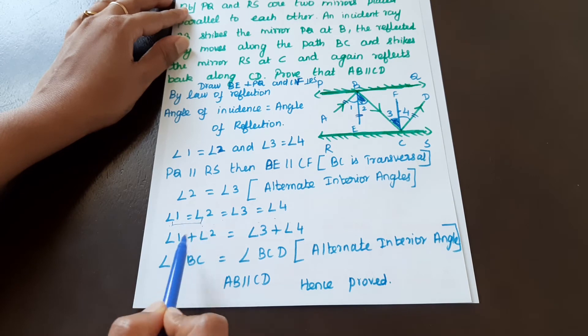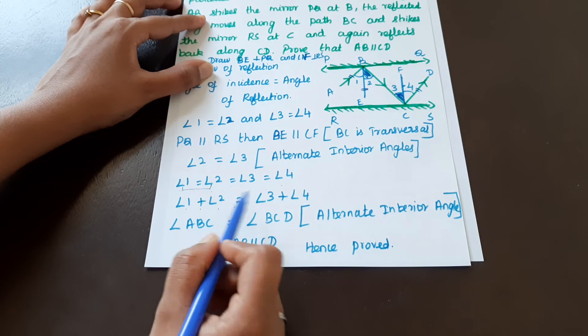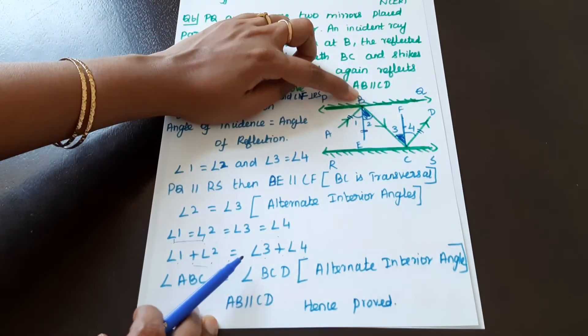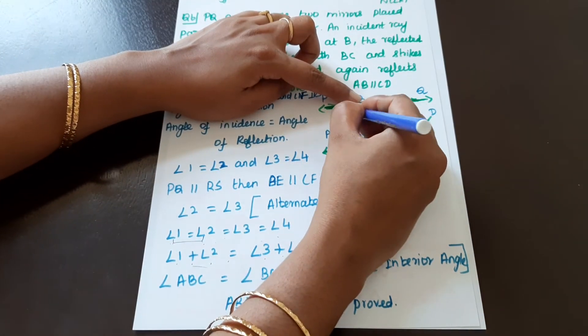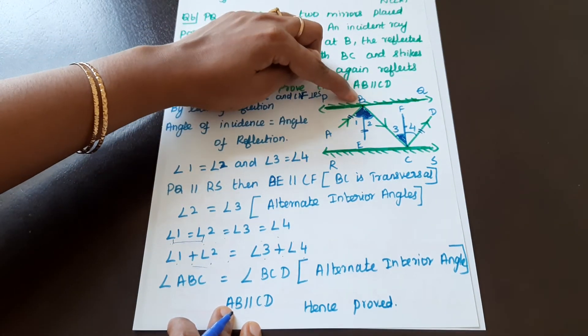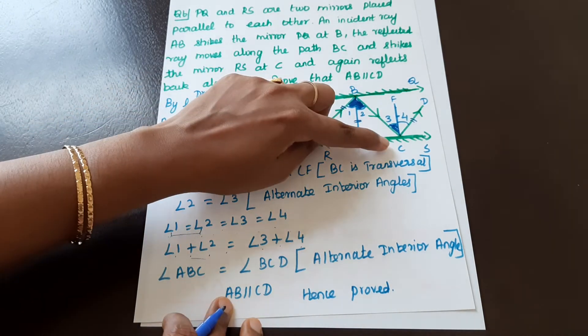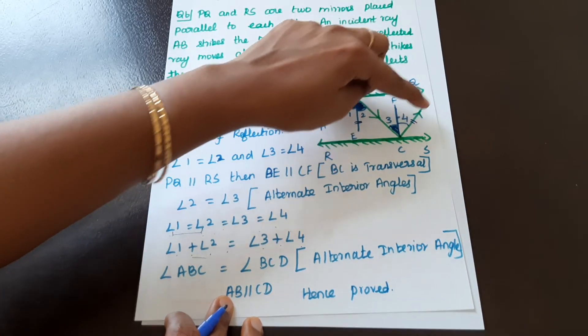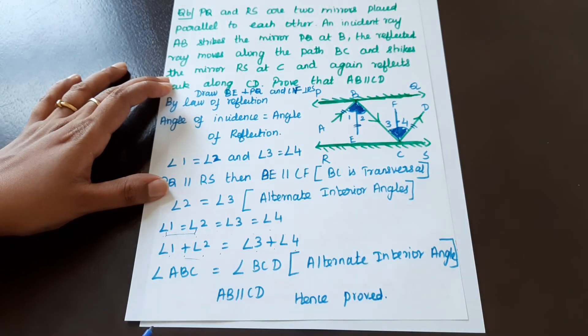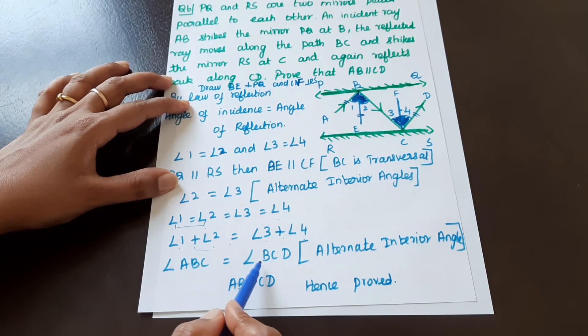Now angle 1 plus angle 2 on the left hand side equals angle 3 plus angle 4 on the right hand side. Angle 1 plus angle 2 equals angle ABC. Similarly, angle 3 plus angle 4 equals angle BCD. Therefore angle ABC equals angle BCD.